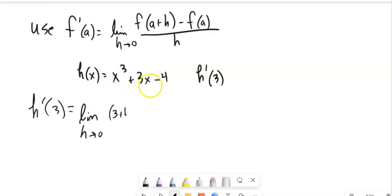So this would be 3 plus h cubed plus 3 times 3 plus h minus 4. That's just this part, f of a plus h.